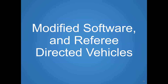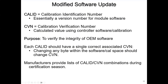For almost two years we've been dealing with modified software. Originally we were doing what they call data check fails — vehicles were failing for data check for a number of reasons. Then in July of 2022, BAR decided they were going to split it out into modified software. You may not see a lot of them, but if you do, you need to understand it.